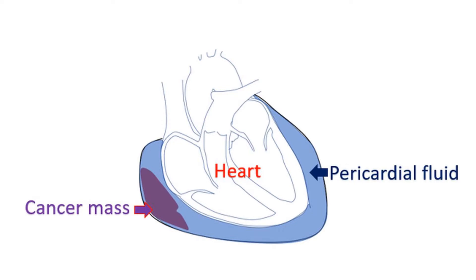One of the most common causes for cardiac tamponade is bleeding into the pericardial cavity due to a cancerous growth. Primary cancers of the heart are rare, and often it is a secondary spread from a nearby organ like the lungs.